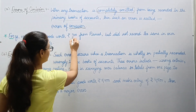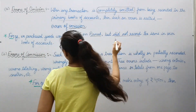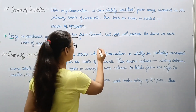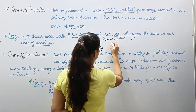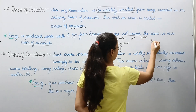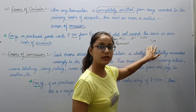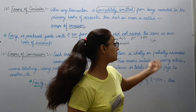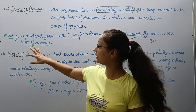Example: We purchased goods worth rupees 300 from Ramesh, but did not record the same in our books of accounts. The entry that should have been made: Purchases account debit, to Ramesh, rupees 300. But you neither debited the purchase account nor credited Ramesh — you completely omitted it. So when you prepare the trial balance, it will still match because there is no effect on debit or credit. But still there is an error — that is, error of omission.